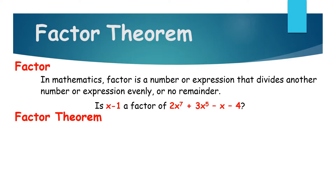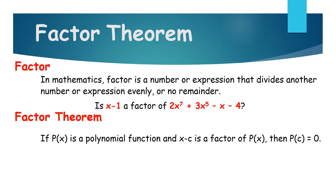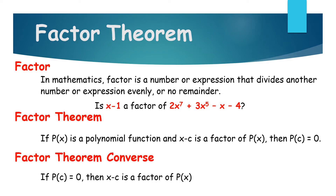According to the Factor Theorem, if p of x is a polynomial function and x minus c is a factor of p of x, then p of c is equal to 0. We can also have the Factor Theorem Converse: if p of c is equal to 0, then x minus c is a factor of p of x.